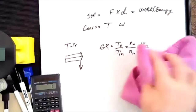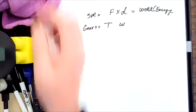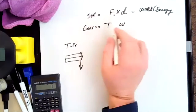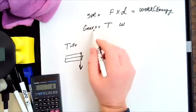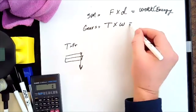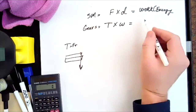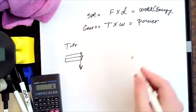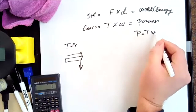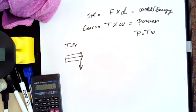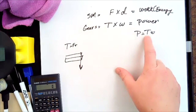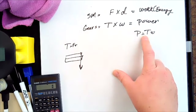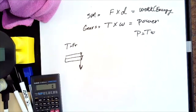Gears was a trade-off of torque and angular speed. For simple machines, force times displacement gives you work. For gears, if you take torque times angular velocity, you get power. Power equals torque times angular speed. So if you increase torque, angular speed goes down, and power would like to stay the same.